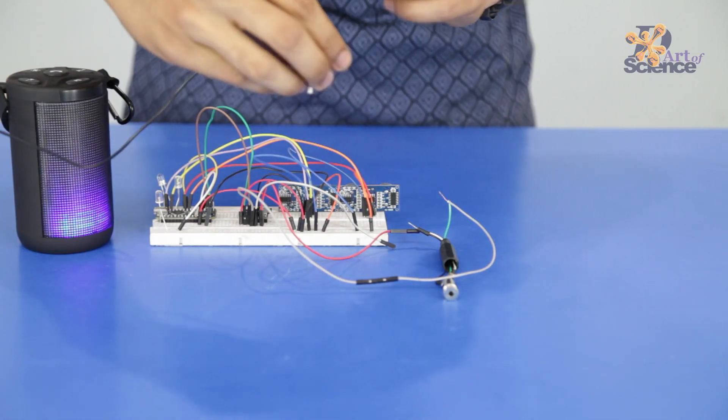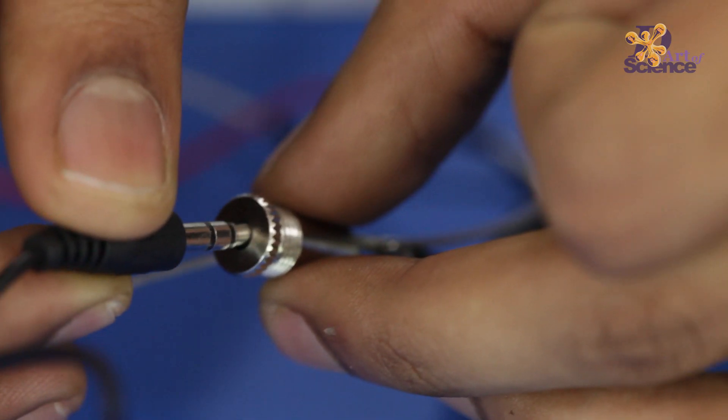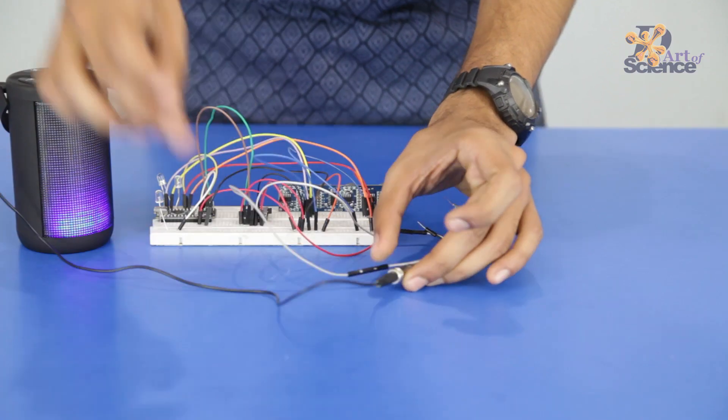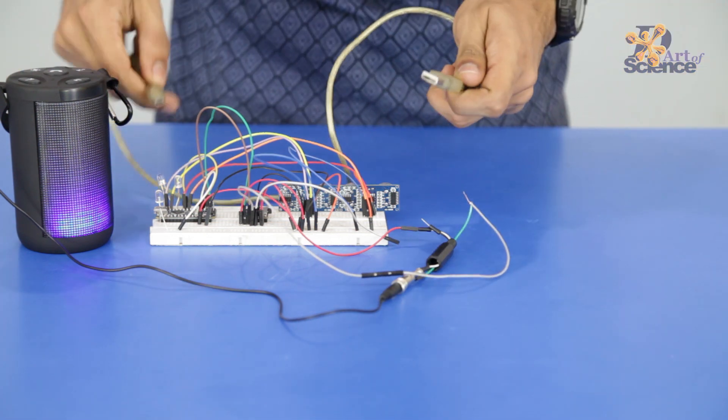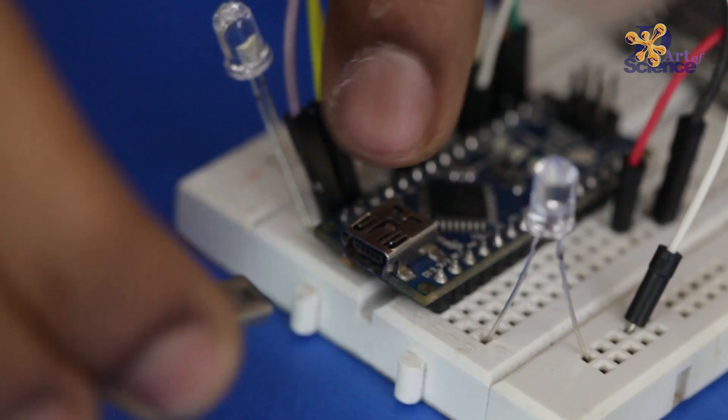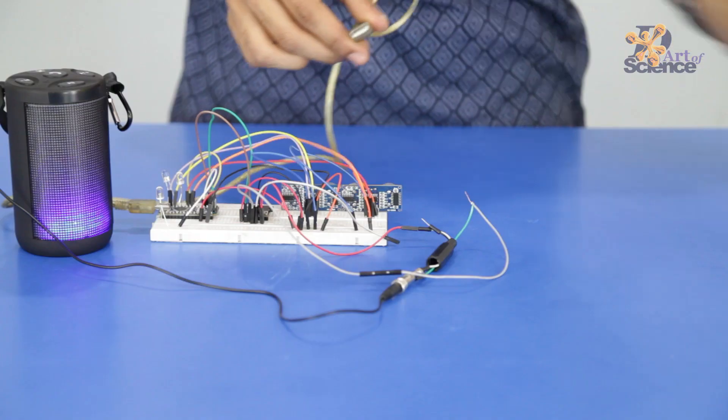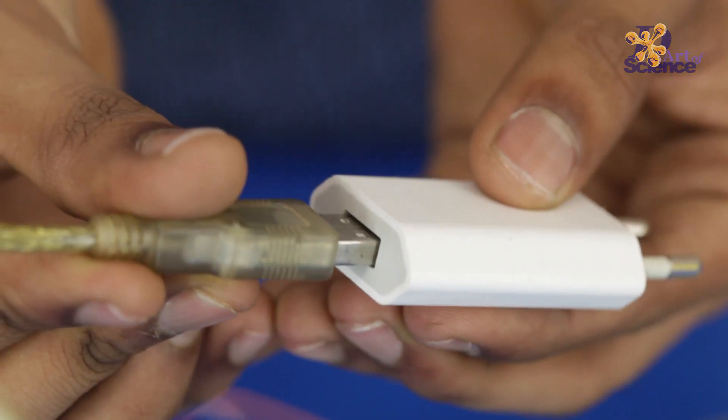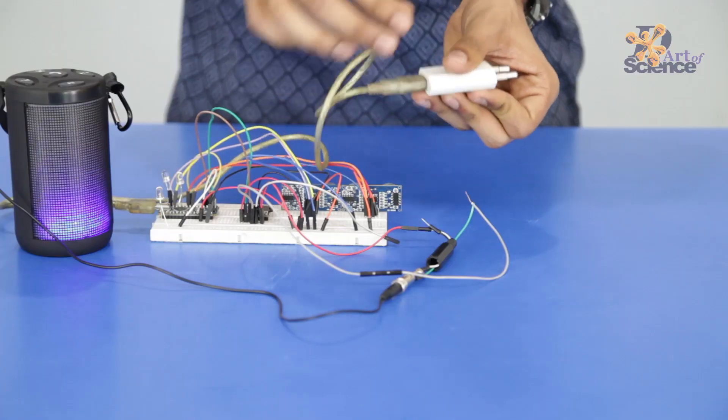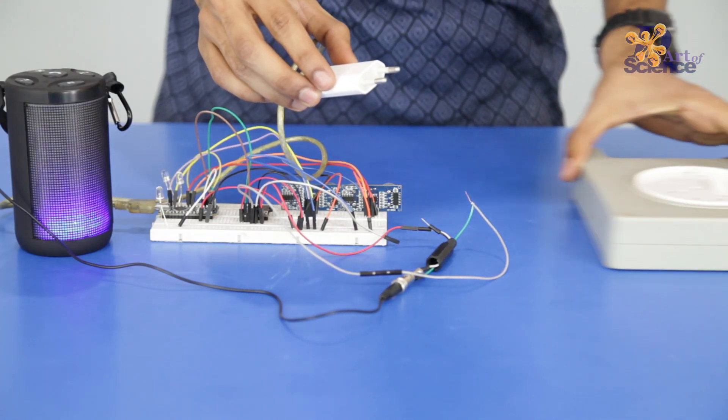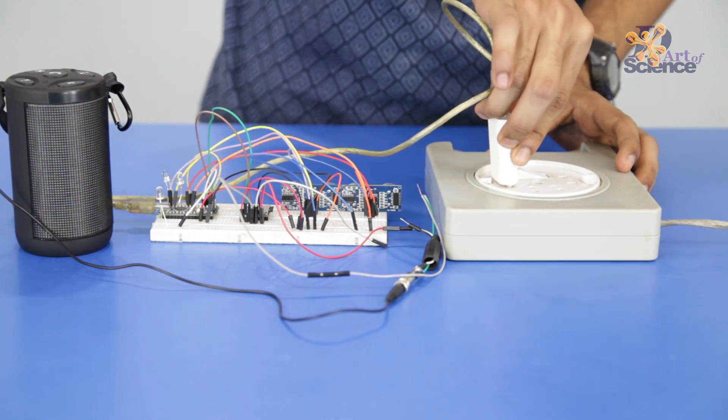Plug in the 3.5 mm jack of a portable speaker to the 3.5 mm female jack. Connect the Arduino to a USB cable and plug it into a 5V power adapter. Next, connect the adapter to a power supply and this completes our circuit.